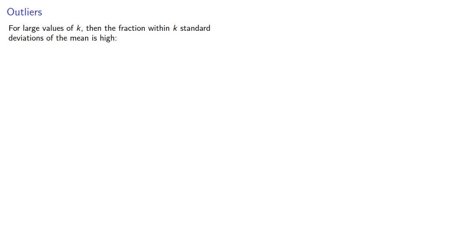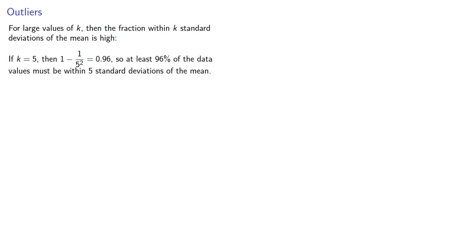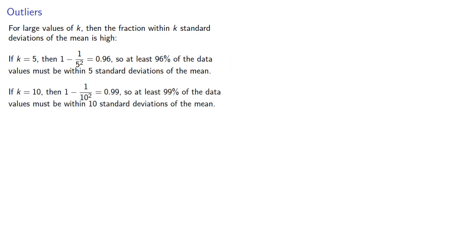The thing to notice is that for large values of k, the fraction within k standard deviations of the mean is very high. For example, if k equals 5, then 1 minus 1 over 5 squared equals 0.96, so at least 96% of the data values must be within five standard deviations of the mean. If k equals 10, then 1 minus 1 over 10 squared equals 0.99, so at least 99% of the data values must be within 10 standard deviations of the mean.